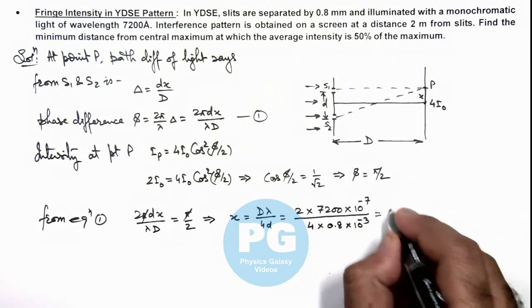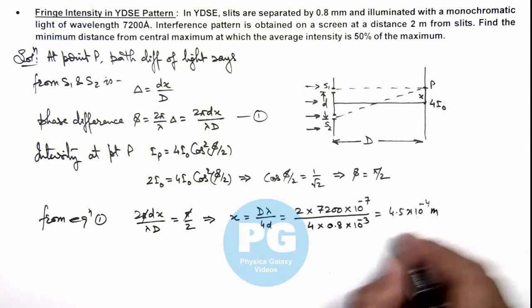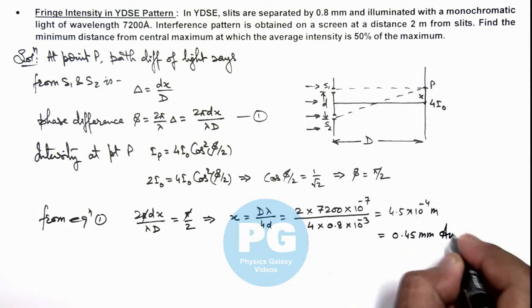If you simplify this will give us 4.5 into 10⁻⁴ meter, or this is 0.45 mm. That is the result of this problem.